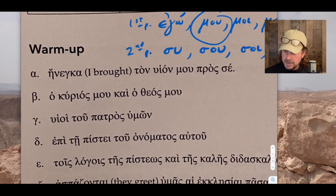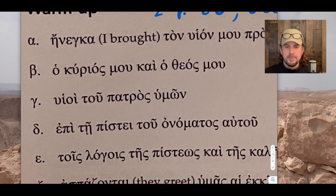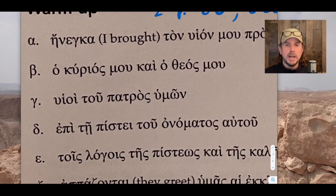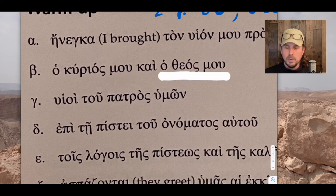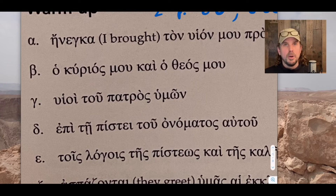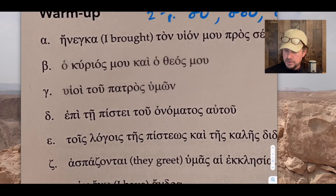Let's look at warm-up number beta: ὁ κύριός μου καὶ ὁ θεός μου. 'The Lord of me and the God of me.' That's pretty easy — 'My Lord and my God,' 'my master and my God.' Pretty straightforward.